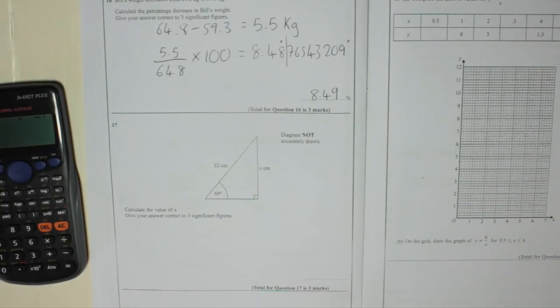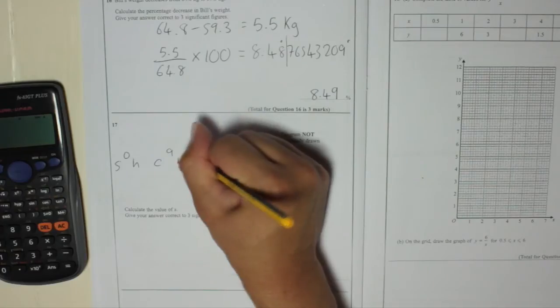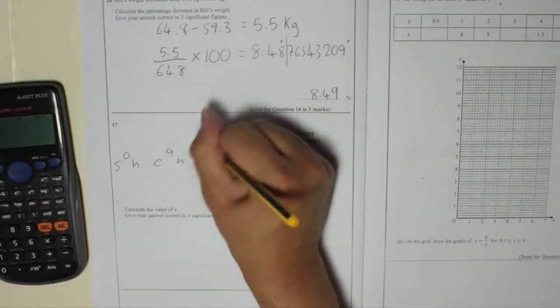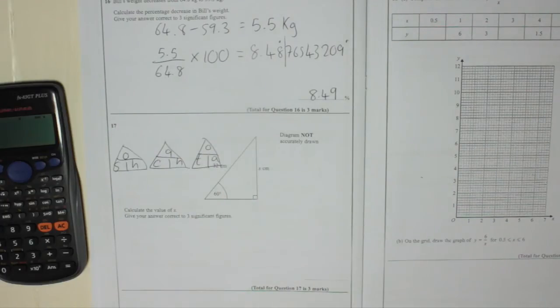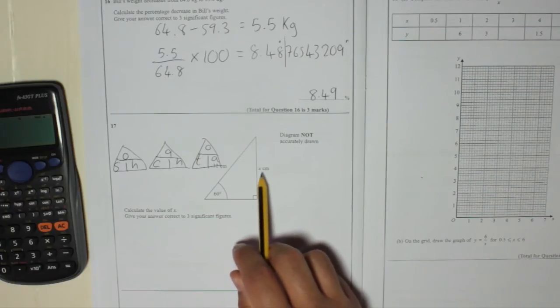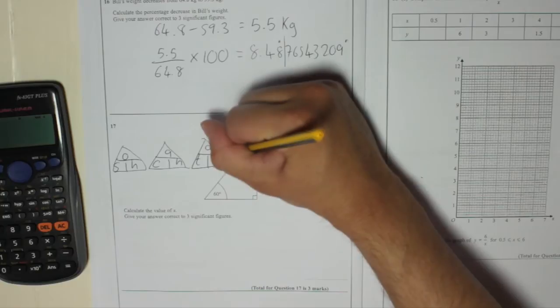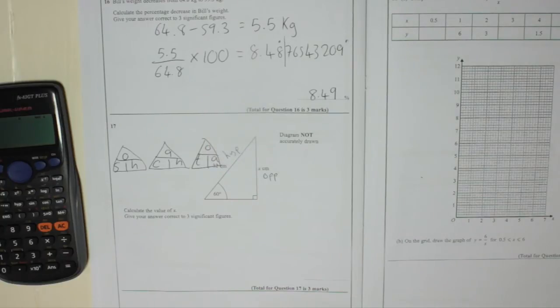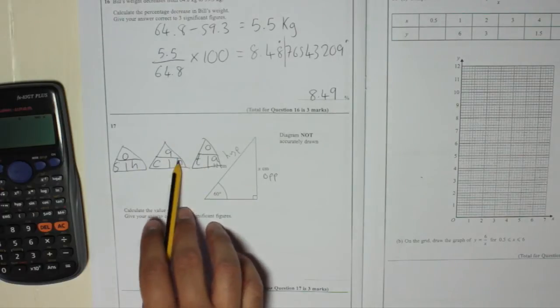Calculate the value of X. Now remember, SOHCAHTOA: S-O-H, C-A-H, T-O-A are the three formula triangles you use in Trigonometry. So remember those. We want to find - we've got an angle here, 60 degrees. We want to find this one, which is the opposite. We've got 32 over here, which is the hypotenuse. So which of these contains O for opposite and H for hypotenuse? Well, it's this one.